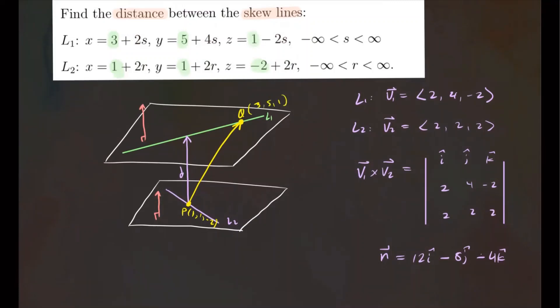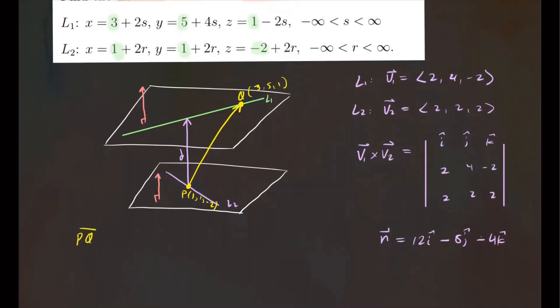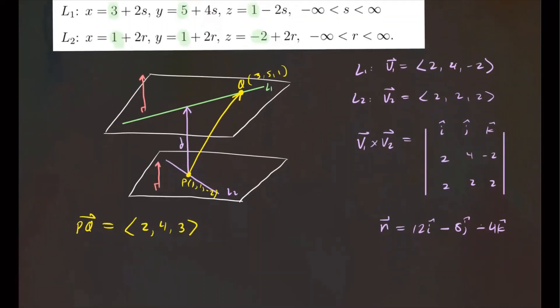Now, we're going to create a vector from P to Q. So the vector P to Q is going to be, again, you do components of Q, subtract components of P. So 3 minus 1, that's 2. 5 minus 1, that's 4. And then 1 minus negative 2, that's 3. All right. So that's our vector representing from P to Q. Now, so I know this vector and I know this vector. So let's project PQ onto D so we can find what is the distance.